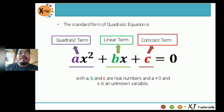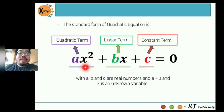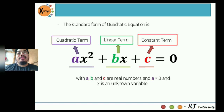Just a quick heads up: there are actually quadratic equations in some books or online sources that don't use the letter x as their unknown variable. So if that is the case, in order for us to determine the quadratic term, we need to double-check the exponents of the variable. In the quadratic term, the variable has an exponent of 2. In the linear term, the exponent of the variable is 1. And in the constant term, it doesn't have a variable.